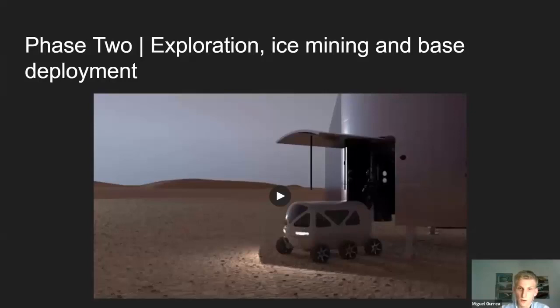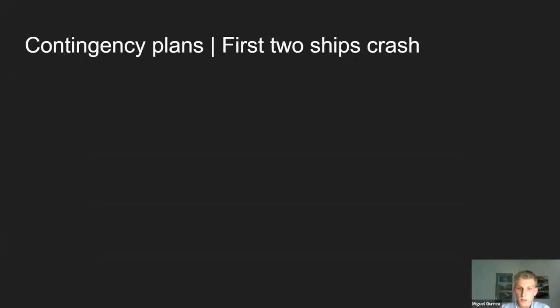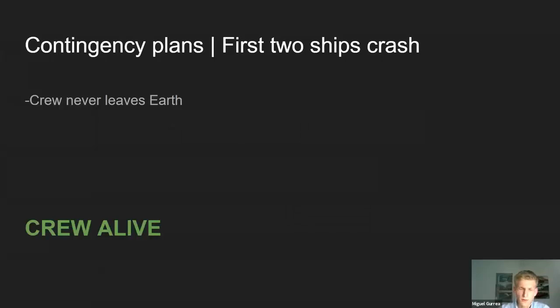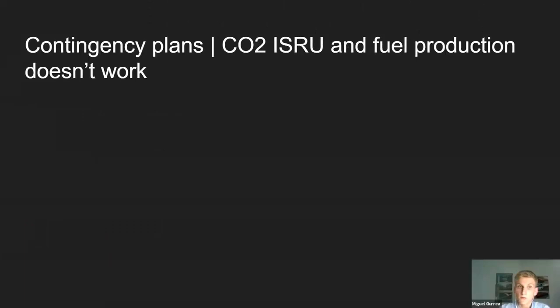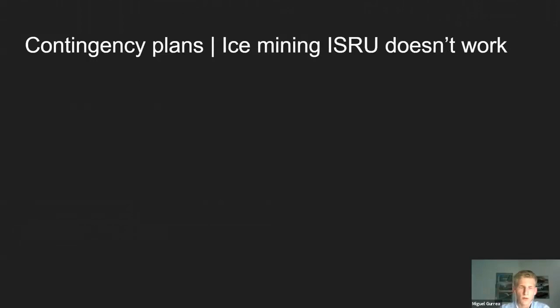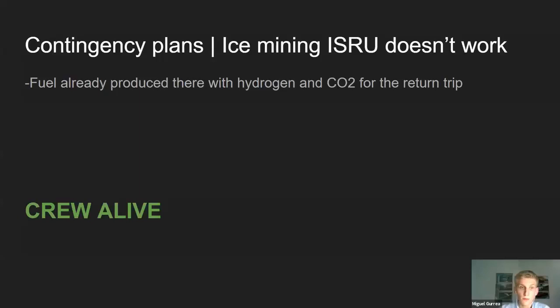This plan is designed to survive many scenarios. First: what if any of the first two ships crash? Easy — the crew would never have launched yet, so they'd be alive. Same if the CO2 ISRU or fuel production doesn't work — if Starship Victoria is unable to produce fuel from CO2 and the stored hydrogen, the astronauts would never leave Earth. What if ice mining doesn't work? In SpaceX's plan or Mars Direct 2.0, the astronauts would die with no way to produce return fuel. But in this case, they already have enough fuel produced from hydrogen and CO2 for the return trip — the crew would survive.